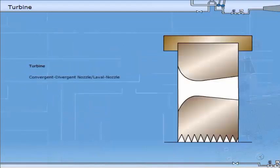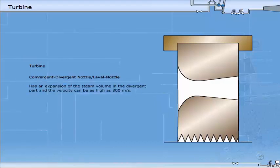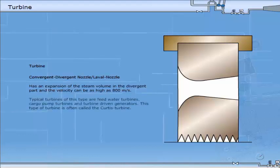The convergent-divergent type of nozzle, also called the Laval nozzle, has an expansion of the steam volume in the divergent part and the velocity can be as high as 800 meters per second. Typical turbines of this type are feed water turbines, cargo pump turbines, and turbine-driven generators. This type of turbine is often called the Curtis turbine.